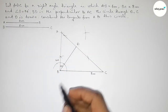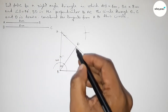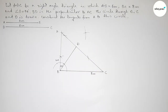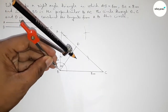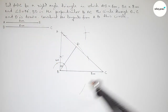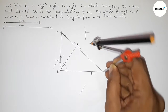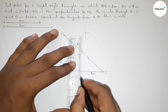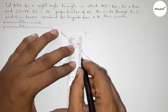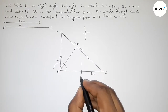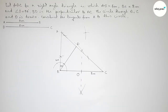Now we have to draw a circle through points D, B, and C. First, we bisect the line BC. Putting the compass on point B, taking greater than half of BC and drawing an arc. With the same length, putting the compass on point C and cutting arcs on both sides. Joining the intersections gives the perpendicular bisector, which meets line BC at center point O.